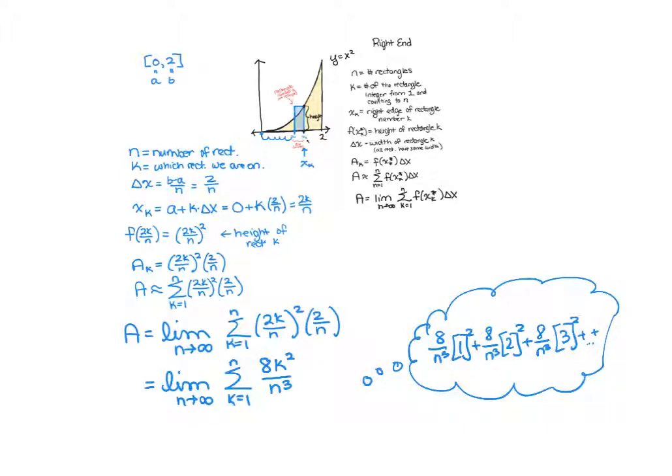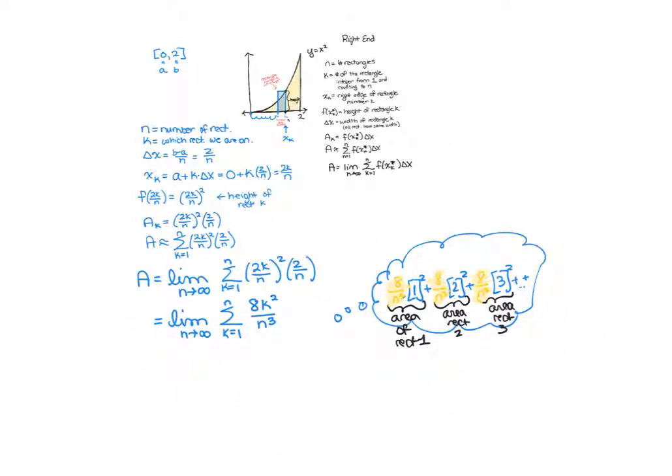But I want you to notice a few things. The first is that this is the area of rectangle 1, this is the area of rectangle 2, and so forth. So you're just adding up areas. The second thing I want you to notice is that there is an 8 over n cubed in front of each of these terms. So even though n is a variable, it's the same n in front of every one of these things that we're adding up. And what that means is that we can pull that 8 over n cubed out front. You can factor it out because you're just adding a bunch of stuff up.